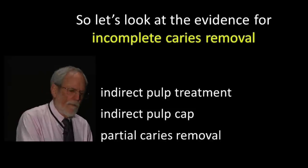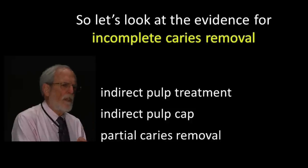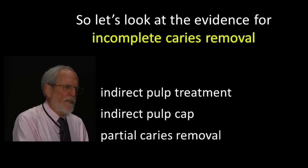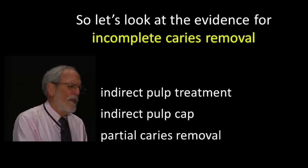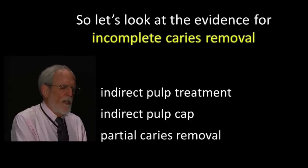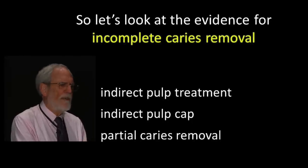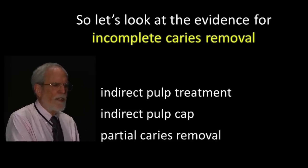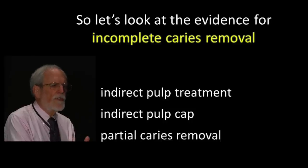How well do these methods work? We have two measures available: pulp exposure as the immediate outcome, and tooth survival rate as the longer-term outcome. You want to minimize pulp exposures. For survival rate, because the literature is limited, we're looking at a short-term intermediate outcome — roughly two to three years, which is as far as the current literature goes.